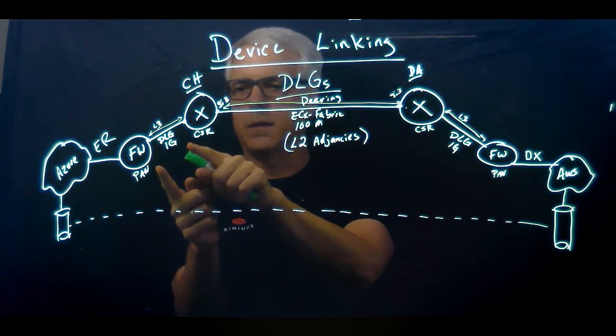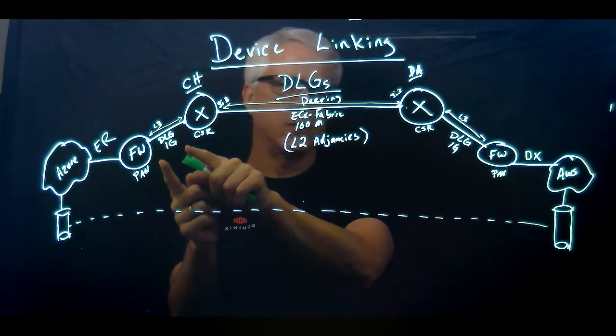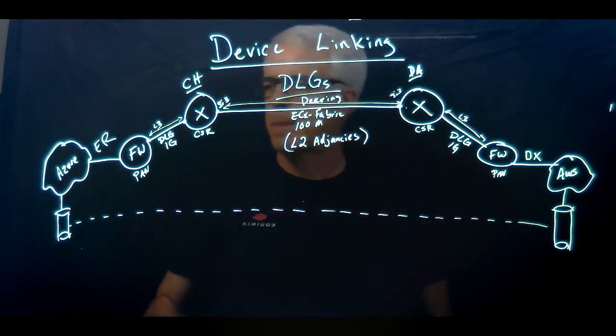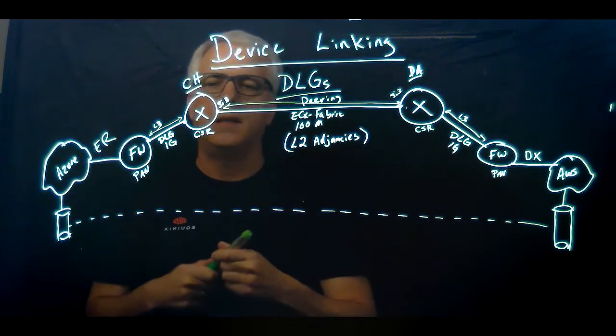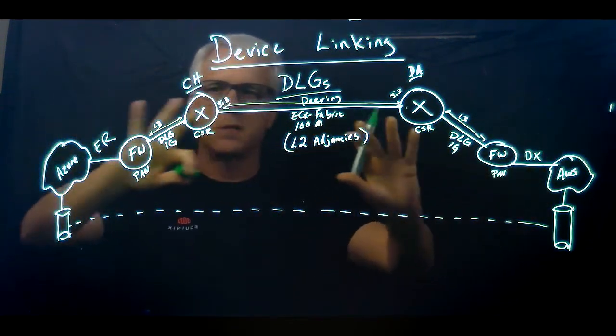get the network edge device and network edge device established here. Same over here. And then once all this has been established, it just becomes a matter of sharing routes across this whole construct.